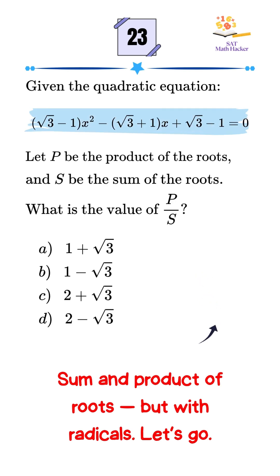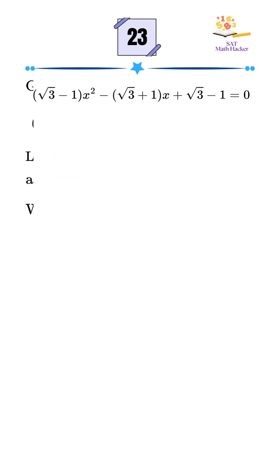In this SAT problem we're given a quadratic equation and asked to find P divided by S, where P is the product of the roots and S is the sum of the roots. Let's break it down step by step.